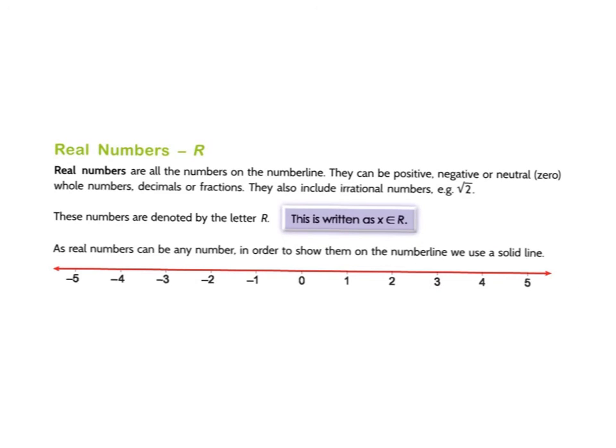The last thing we're going to look at then is real numbers. And as we know, real numbers can be positive, negative, neutral, whole numbers, decimals, or fractions. They encompass all numbers. These numbers are referred to by R, for real numbers. But if we're given a situation where we have to graph or show the solution on the number line with relation to R, it's a little different to the Ns and Zs.